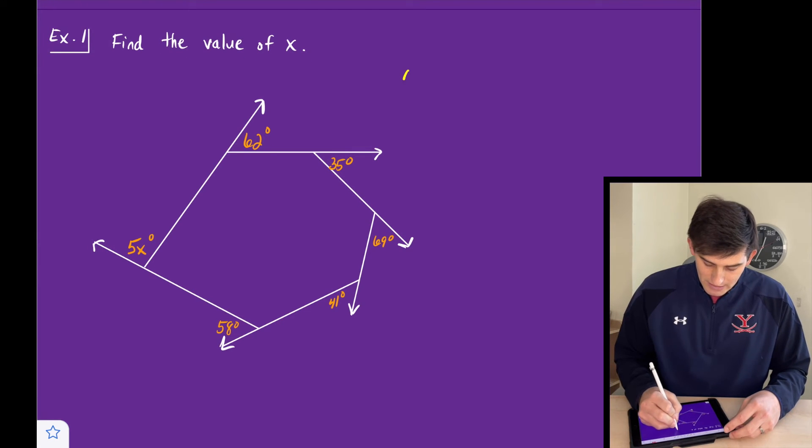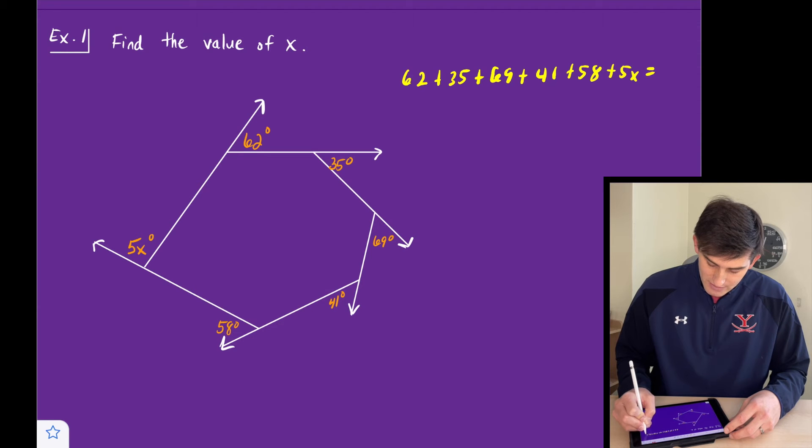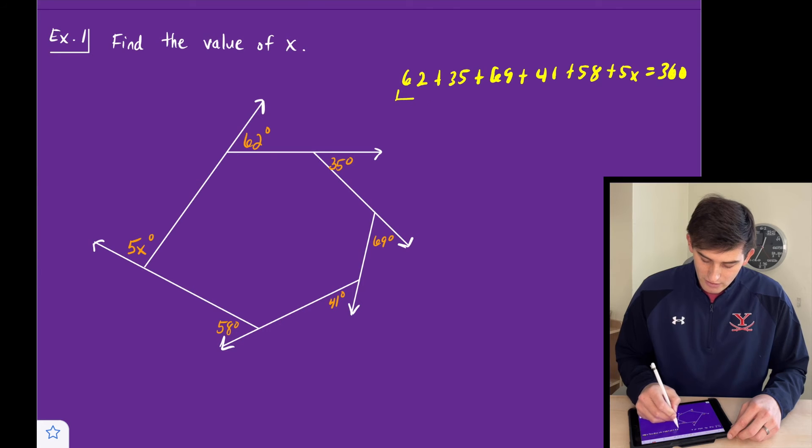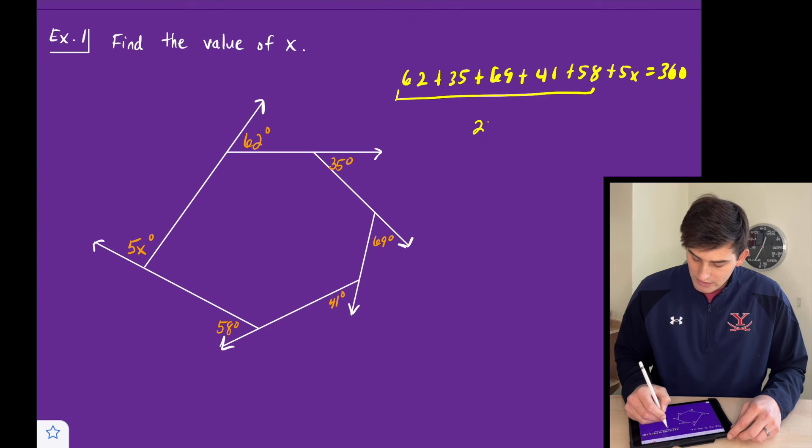So we can say 62 plus 35 plus 69 plus 41 plus 58 plus 5x equals 360 degrees. Once we add all of our constants up here, we're going to get 265 plus 5x equals 360.